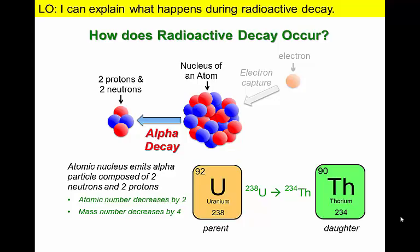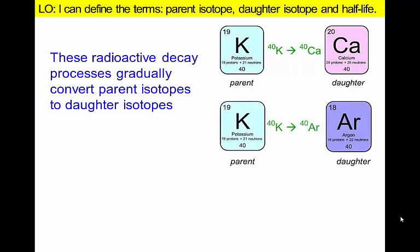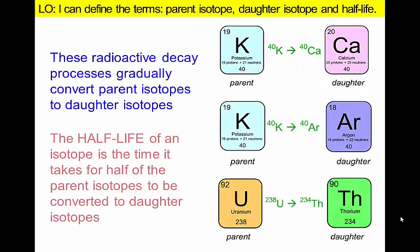So now we know that radioactive decay can occur as parent isotopes lose or gain protons and/or neutrons to become daughter atoms. The time it takes for half of the parent isotope to be converted to a daughter isotope is known as the half-life of the element.